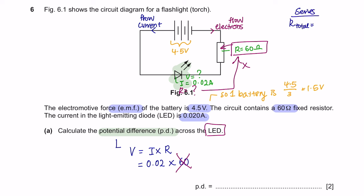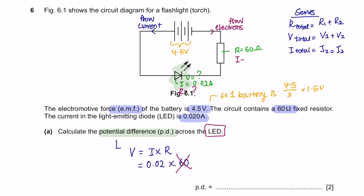In a series circuit, the total resistance of the circuit is the resistance of all the components combined. Same as the voltage. The voltage of the circuit is the voltage of all the components combined together. However, the current in the circuit is equal everywhere. So now we know that the current here is 0.02A, meaning that I can find the voltage of the resistor first. So the voltage of the fixed resistor is 1.2V.